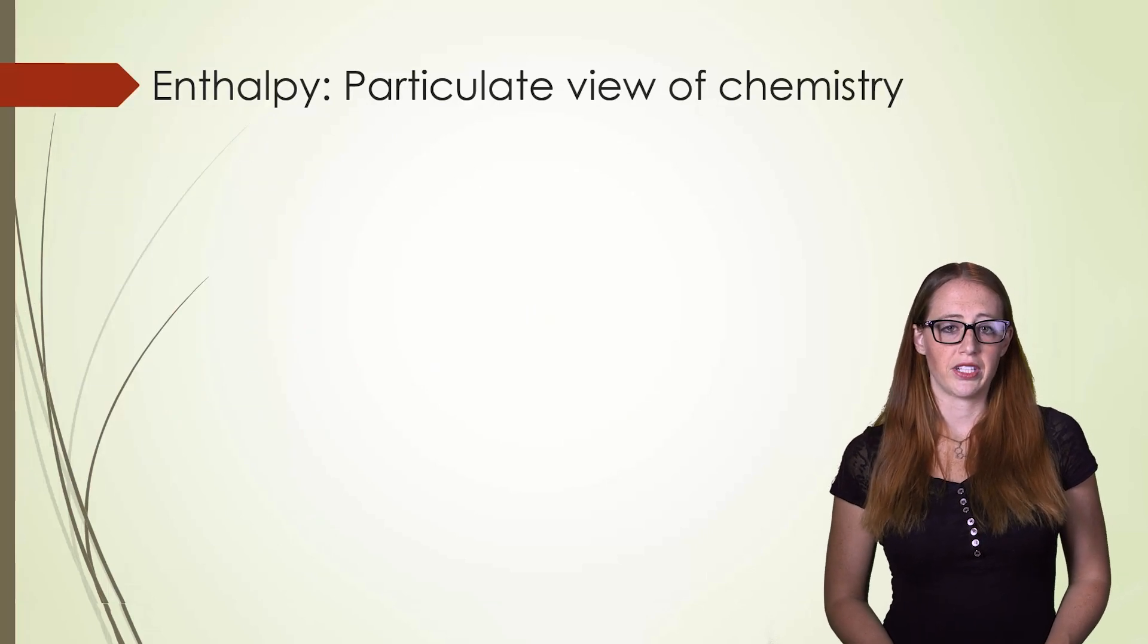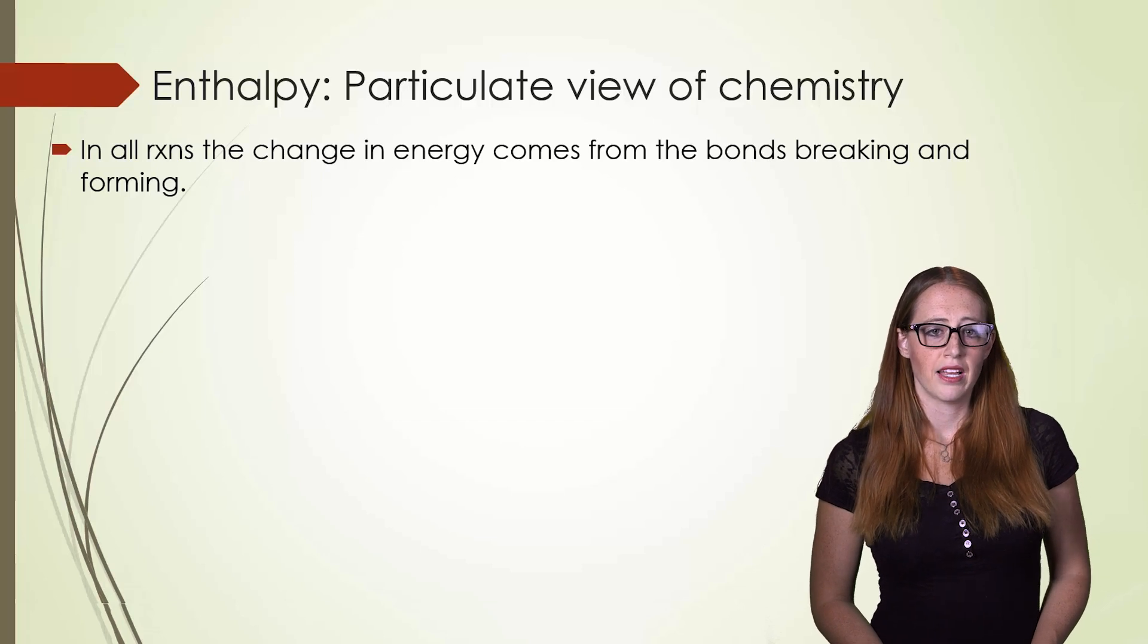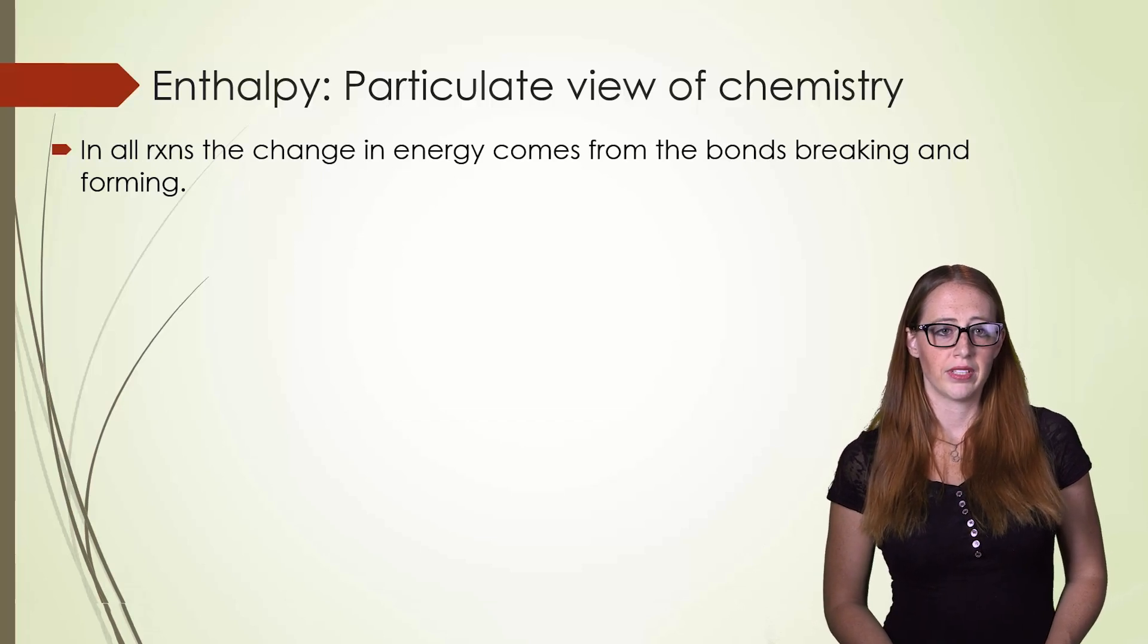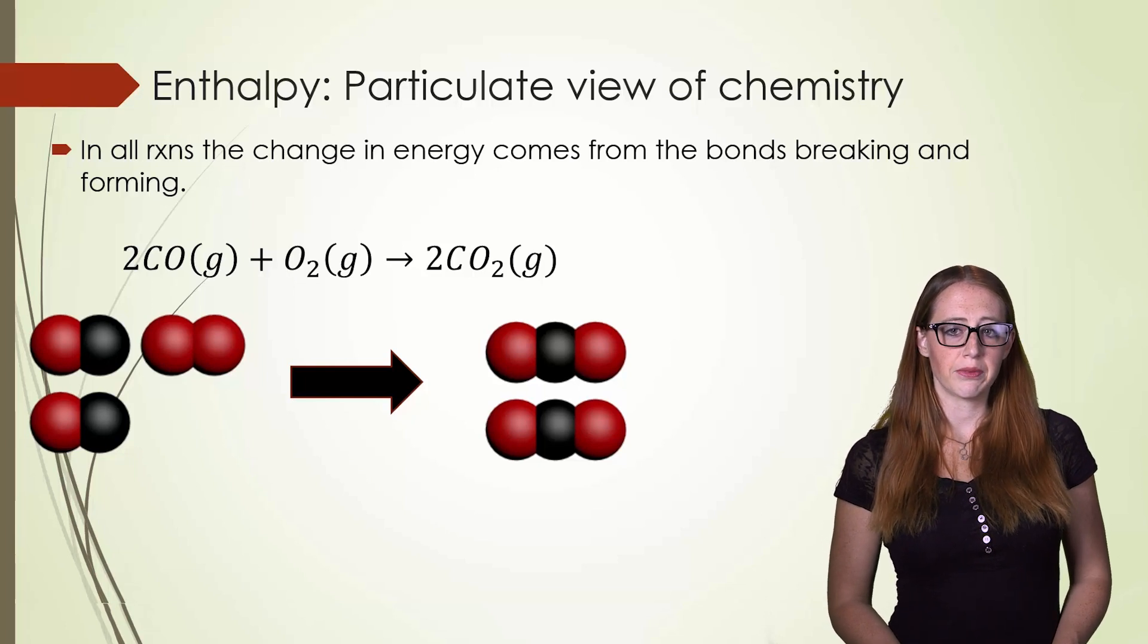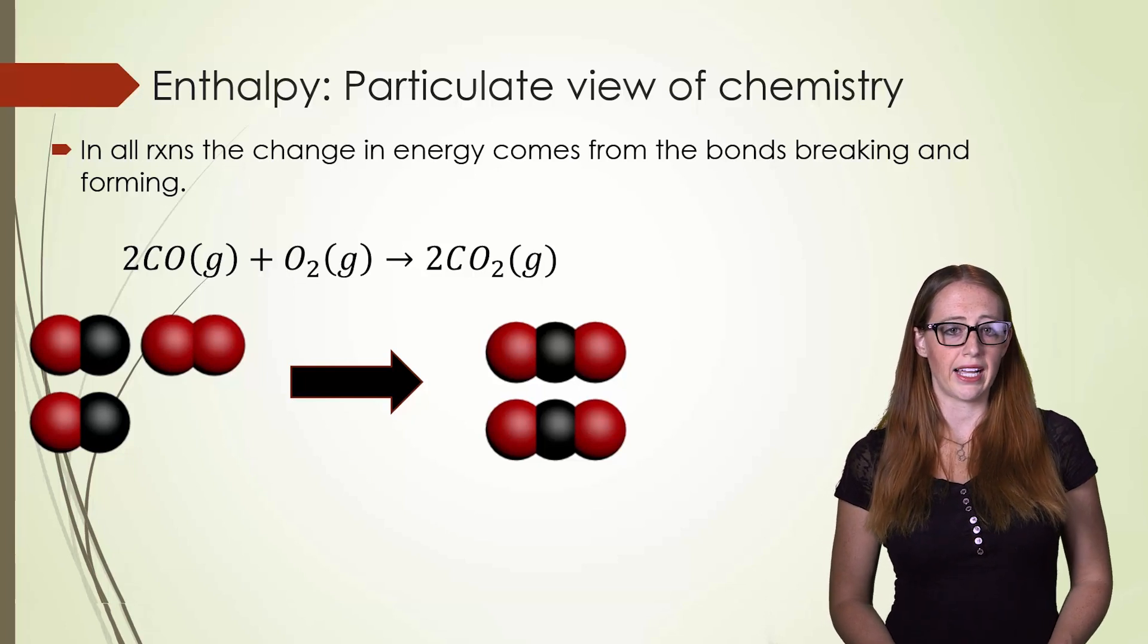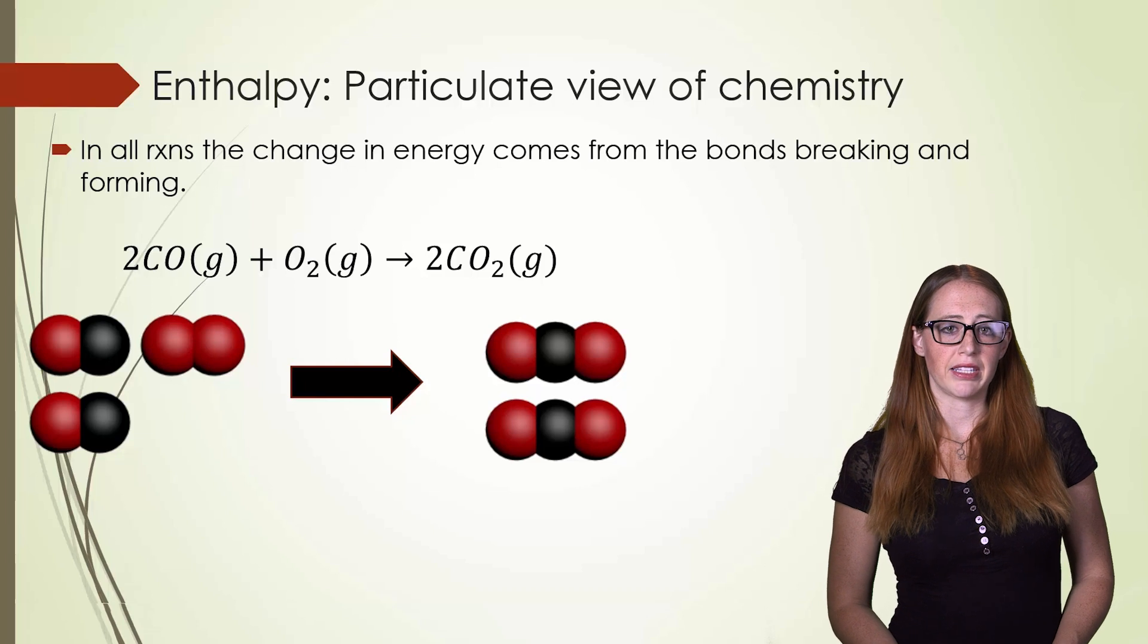Now let's look at a chemical reaction. Remember that the energy in a chemical reaction comes from the bonds that are being broken and formed. If we have a reaction such as this, where two carbon monoxides are reacting with oxygen to form two carbon dioxides, we can look at all the bonds broken and all the bonds formed to approximate the enthalpy of reaction.